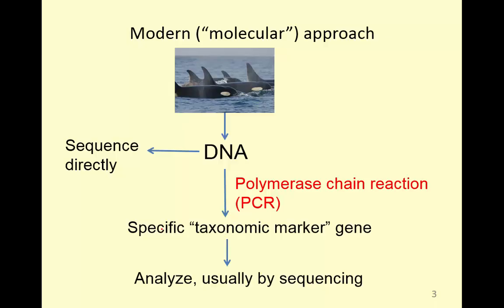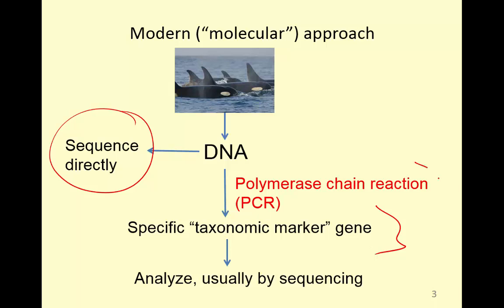The heart of these molecular approaches is basically sequencing. One approach is to sequence directly to DNA, which is becoming more and more common as the cost of sequencing has decreased over the last ten years or so. But it's still very common to look at only one gene that has taxonomic and phylogenetic information, and the way we get at that one gene is through a very powerful approach called PCR — polymerase chain reaction. This is a review of what we talked about, but I hope it will now make a bit more sense.